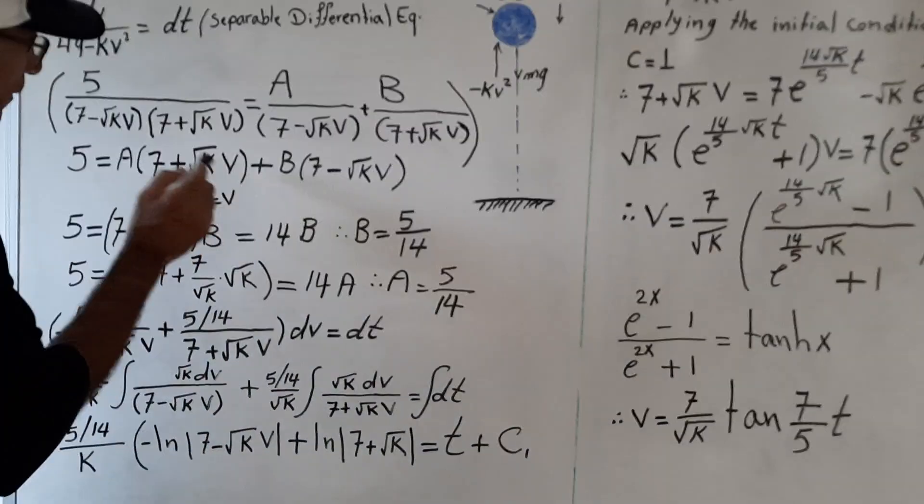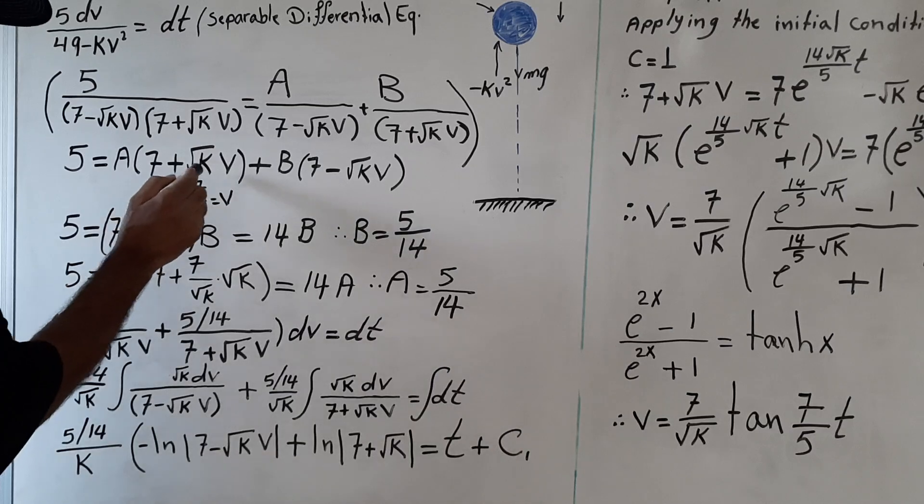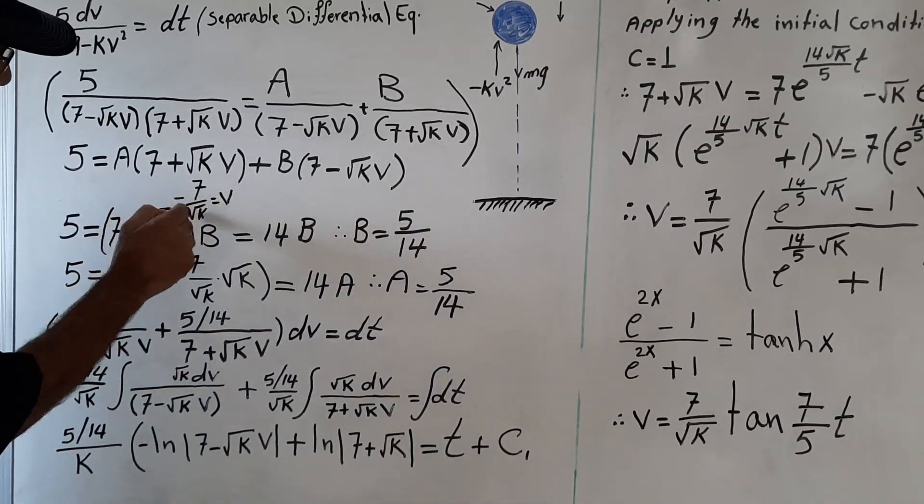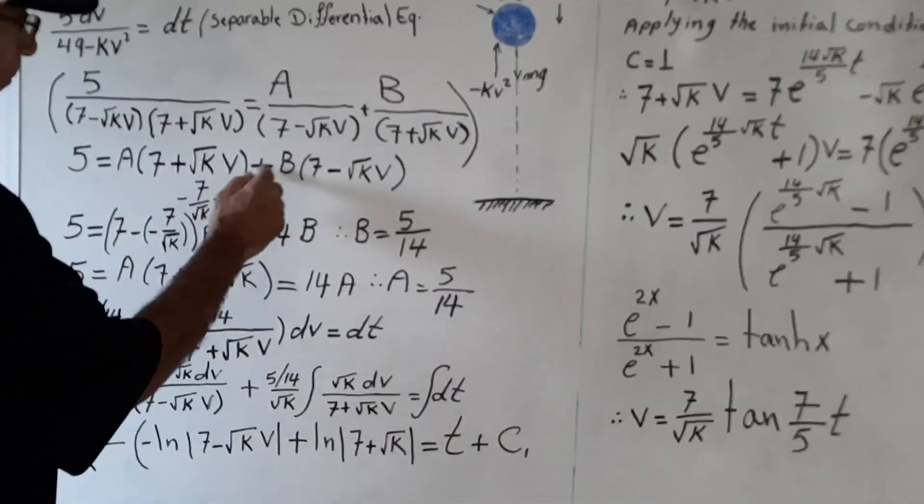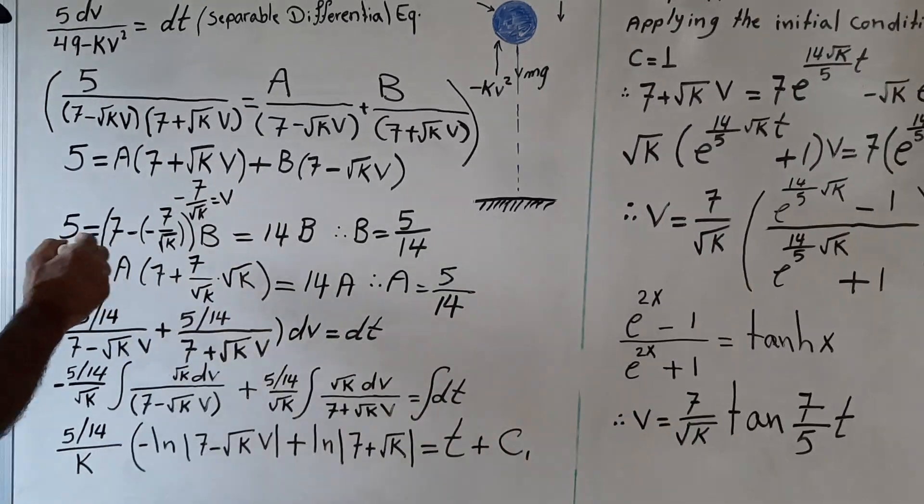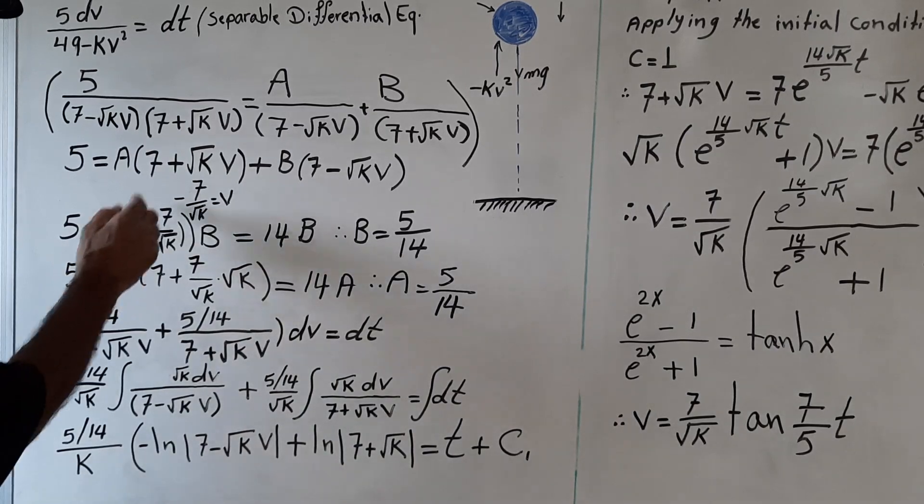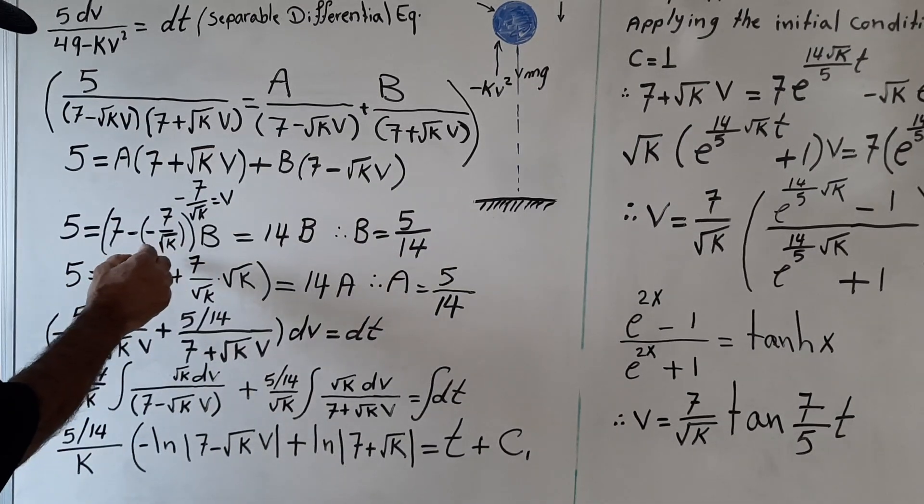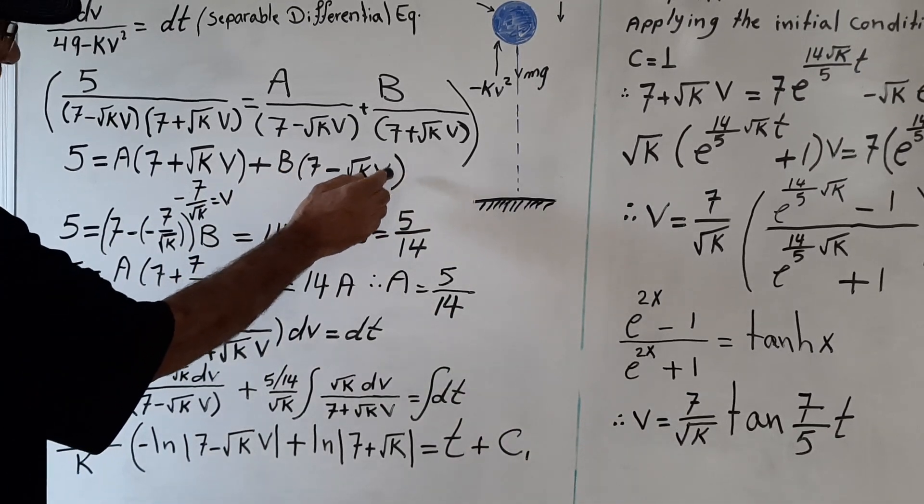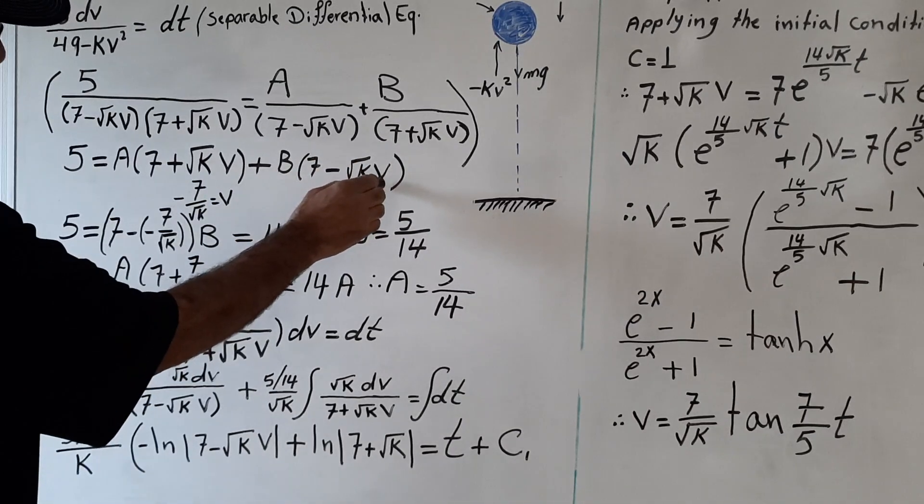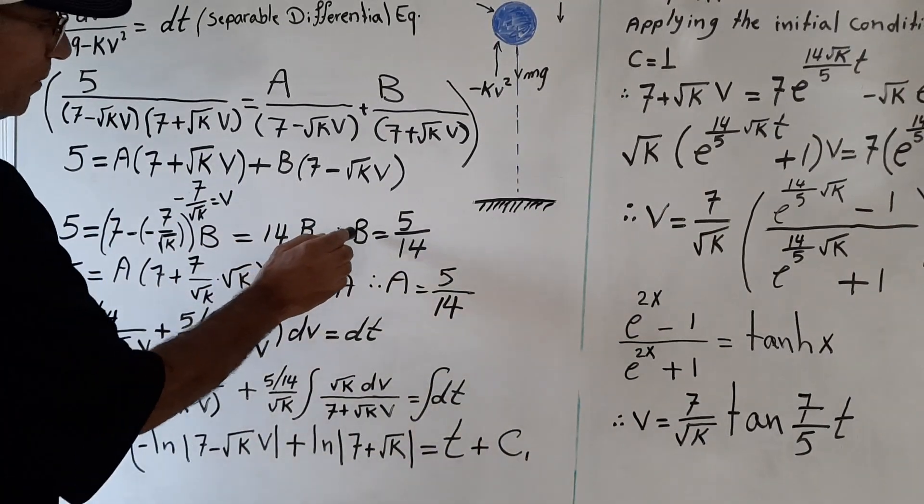What value of v makes this parenthesis equal zero? V should be equal to minus 7 over root square of k. So 5 equals 7 times B, because this one will go to zero. We have 7 minus root square k times v. We put minus 7 over root square of k.